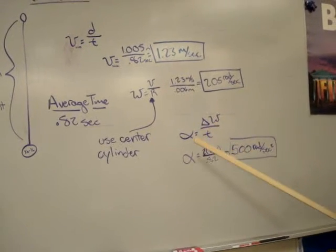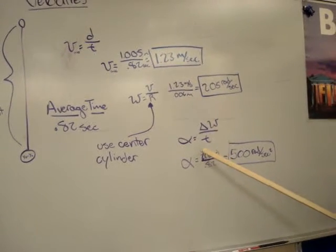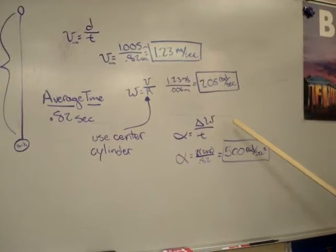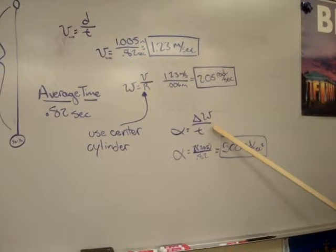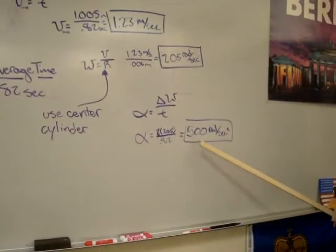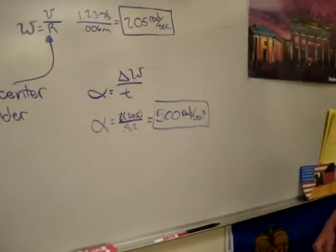Using that, we decided to figure out the angular acceleration as well. Angular velocity over time, as shown here, ended up equaling 500 radians per second squared.